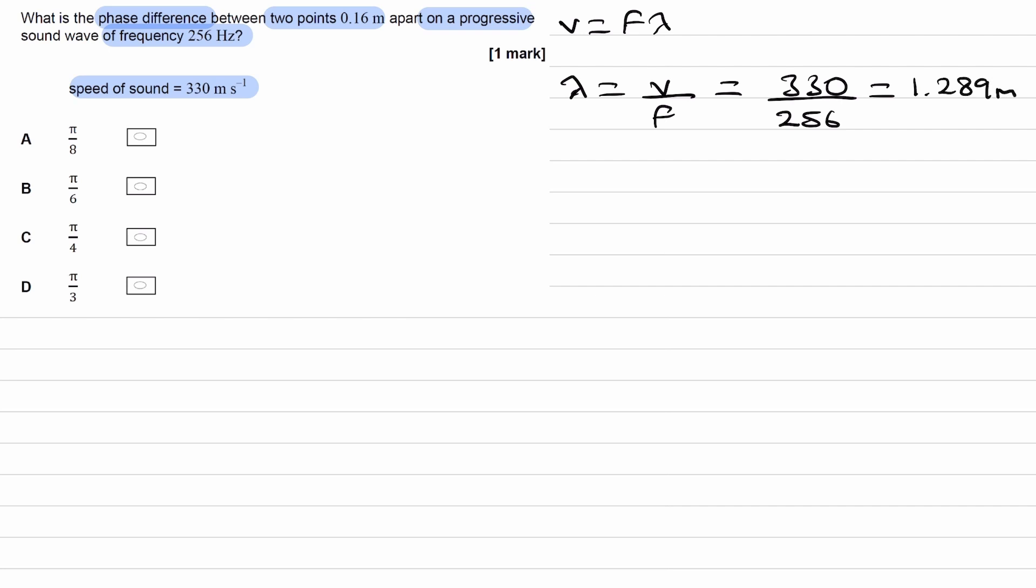Okay, so then to work out the fraction of a cycle between those two points, we do the distance between them, 0.16 meters, divided by one wavelength, so 1.289 meters. This will give us the fraction of a cycle between those two points, and this ends up being 0.124.